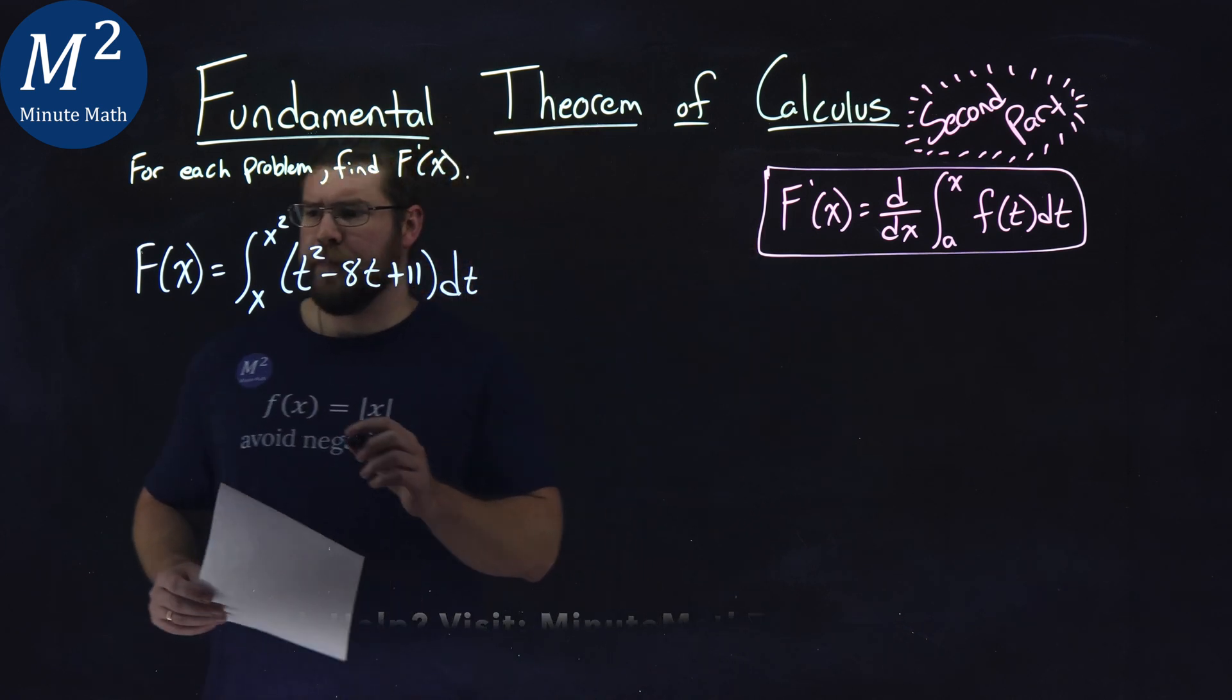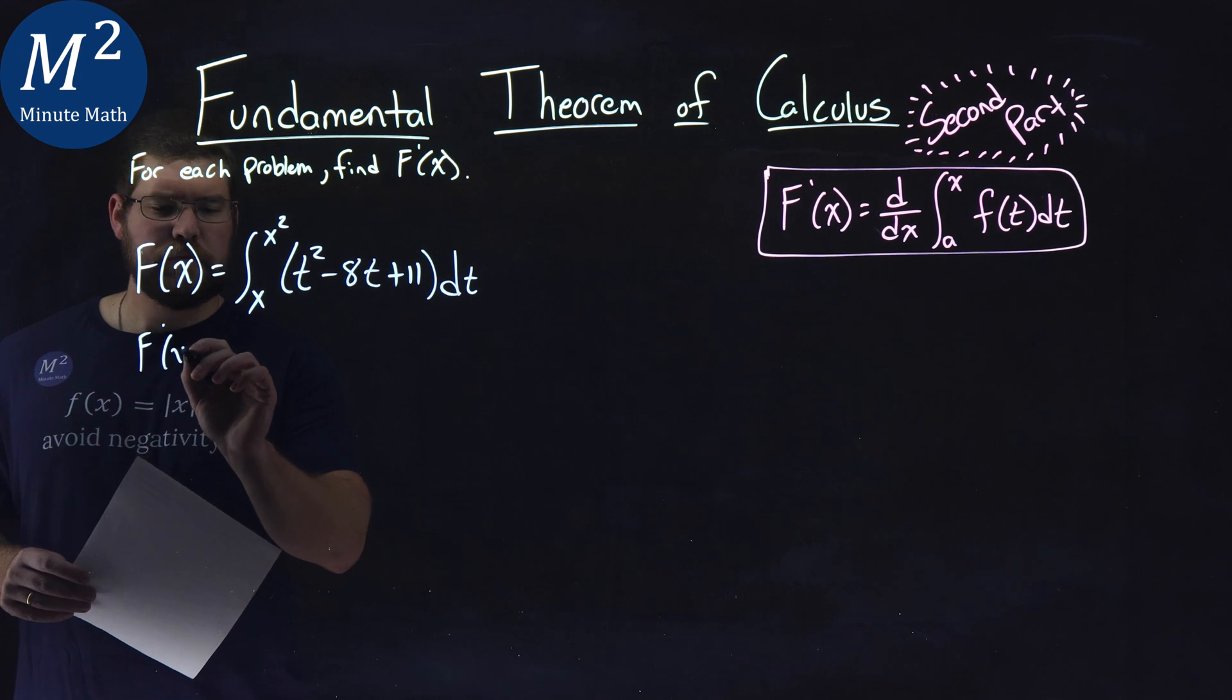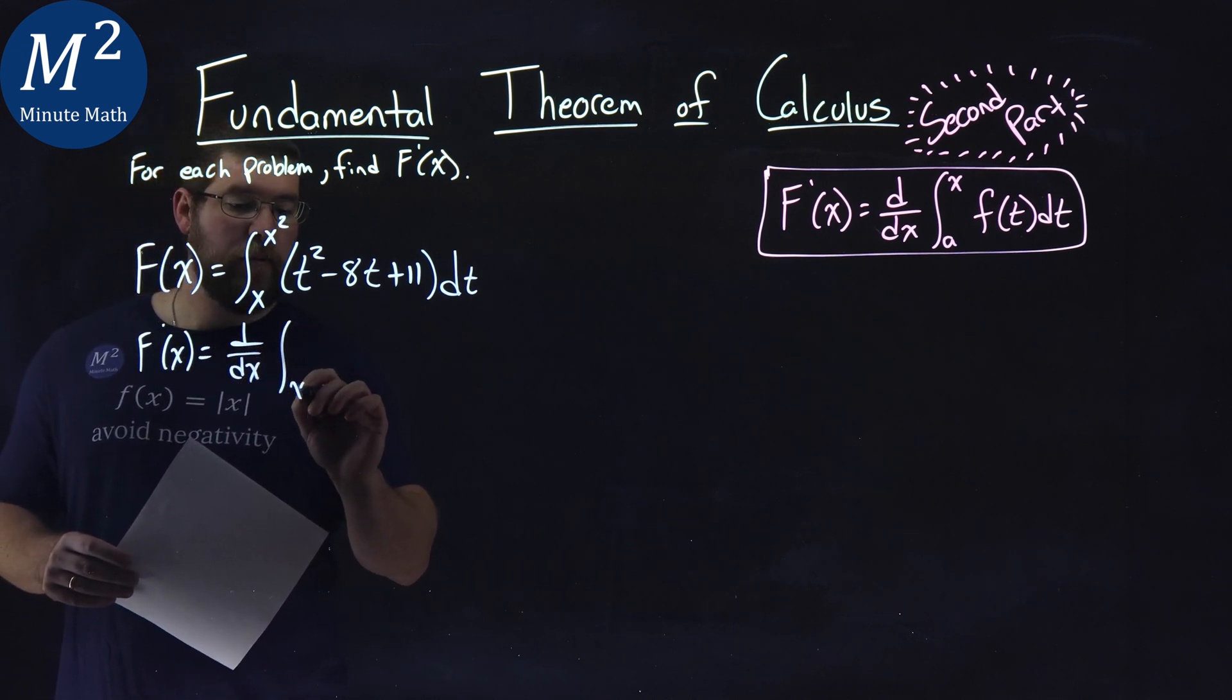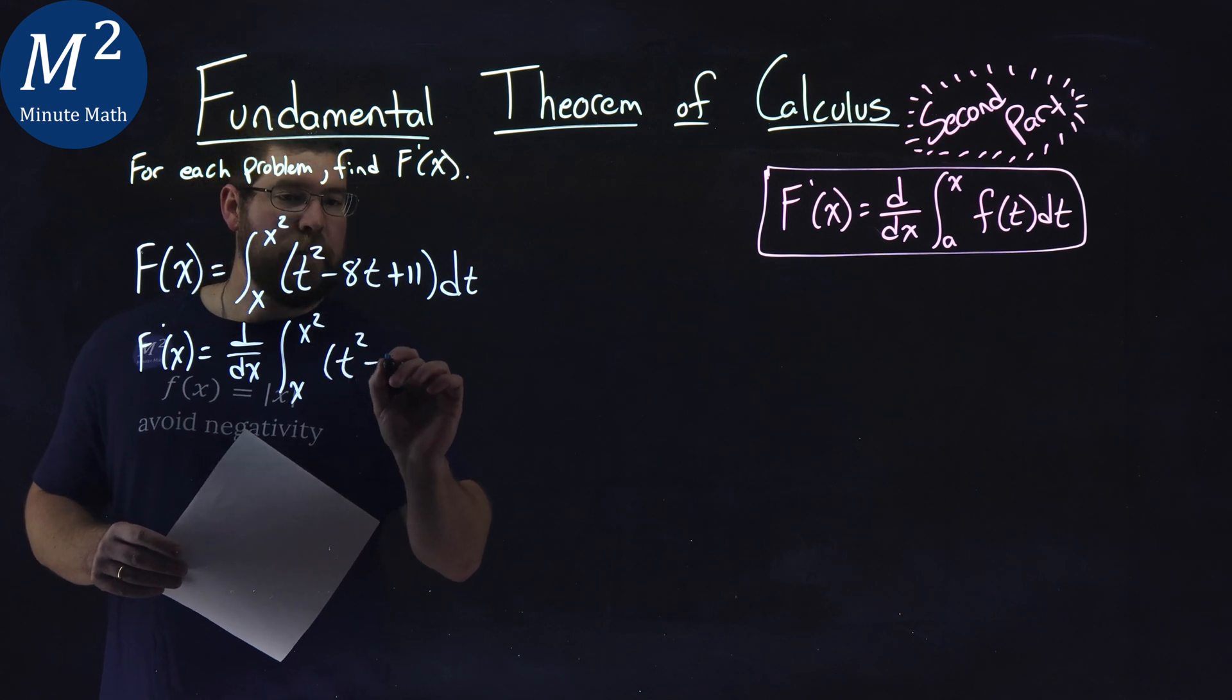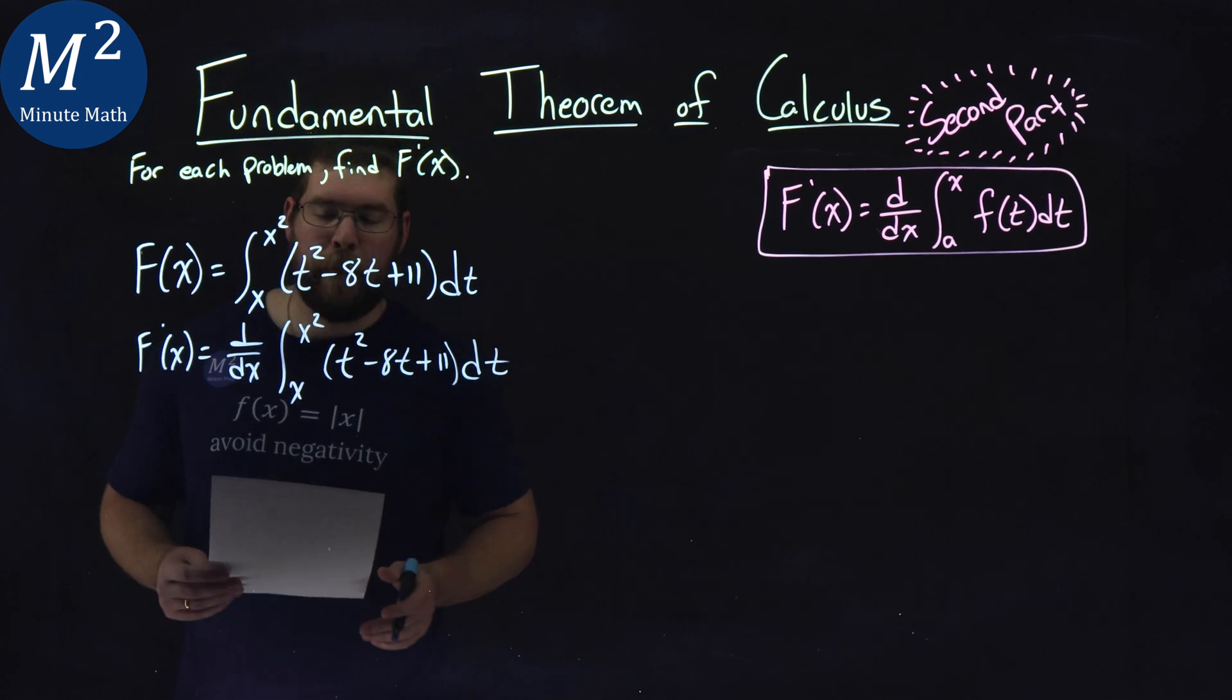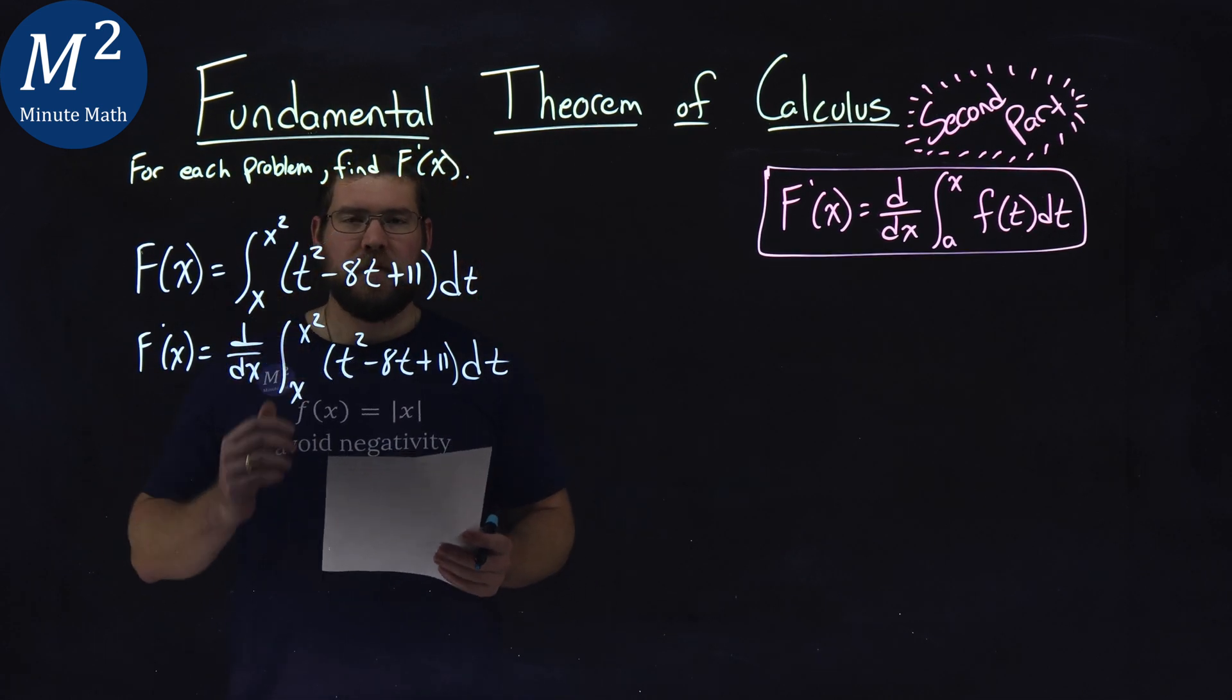So let's use our formula here. f prime of x is equal to d over dx of our integral from x to x squared of t squared minus 8t plus 11 dt. All right, got that all set up.